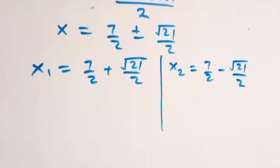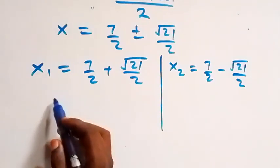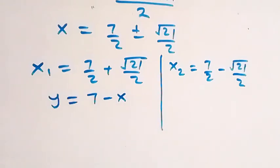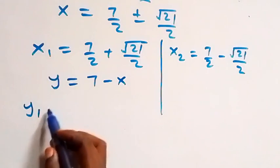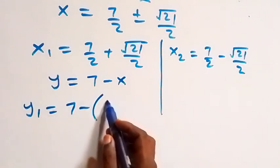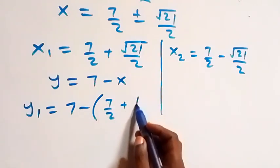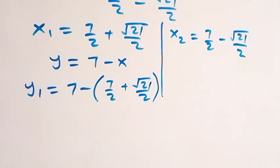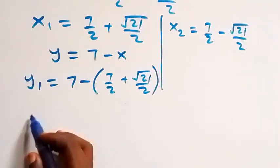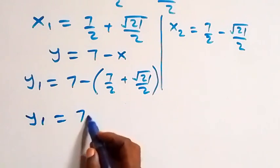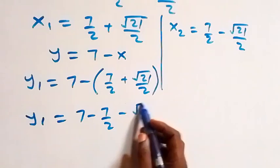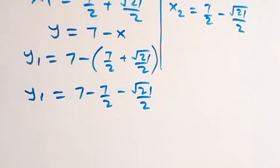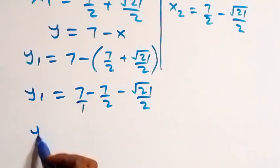From here we get the corresponding values of y from equation three, which is y equals seven minus x. So y₁ equals seven minus x₁, which is seven minus (seven over two plus root 21 over two). Opening the bracket, y₁ equals seven minus seven over two minus root 21 over two.